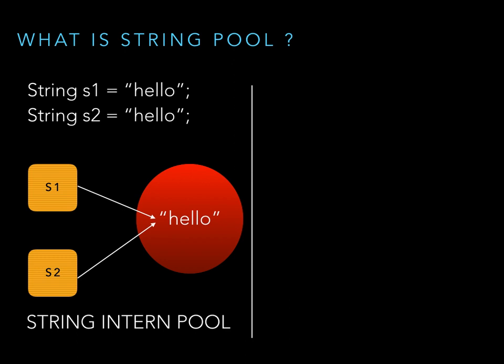Java uses the concept of string literal pooling. If you are creating two different strings with the same value, Java will not create two different values in the string pool. It creates just one value and refers both s1 and s2 to that same value — 'hello'. So in the string pool, only one value is created and both s1 and s2 refer to it.